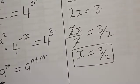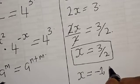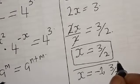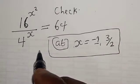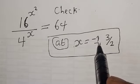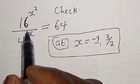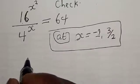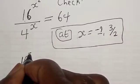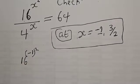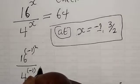Therefore, our final answers are s equals minus 1 and s equals 3 over 2. Now we can check to confirm if our answers are correct. At s equals minus 1 and s equals 3 over 2, substituting back into the original equation: 16 raised to the power s squared divided by 4 raised to the power s must equal 64. Let's check at s equals minus 1.